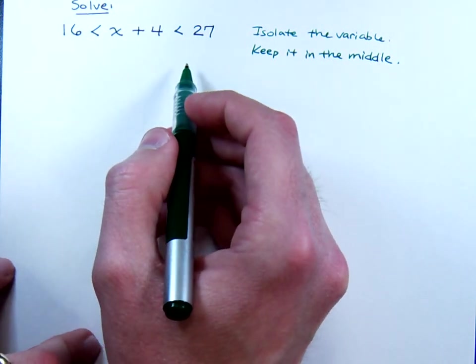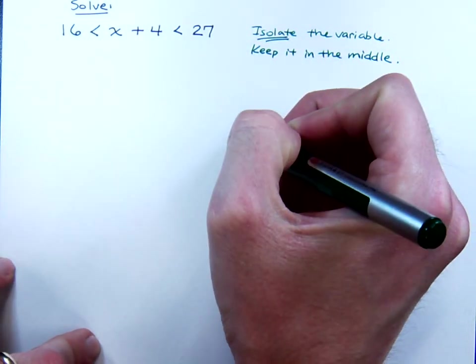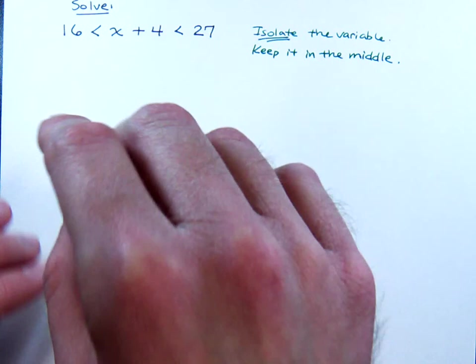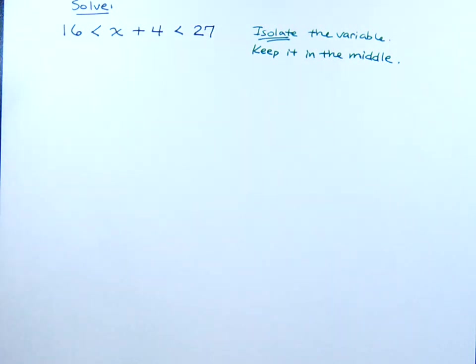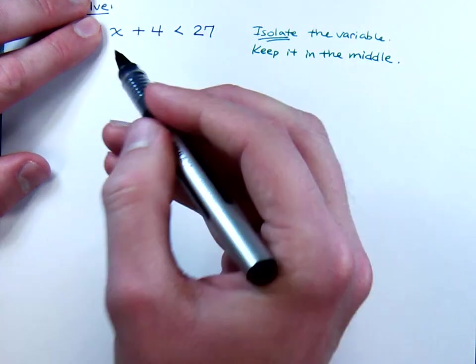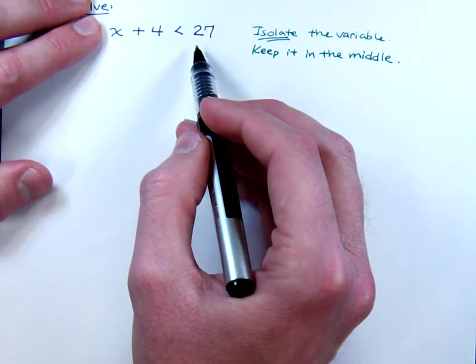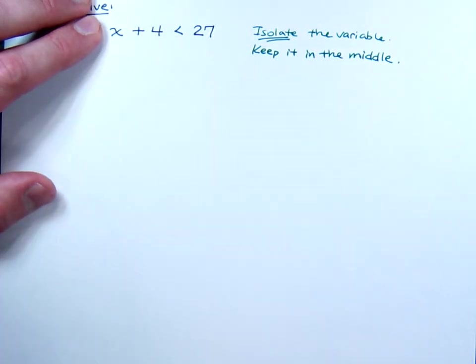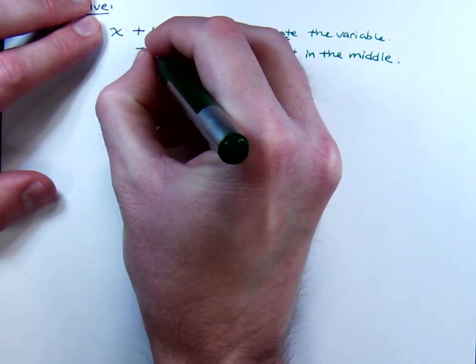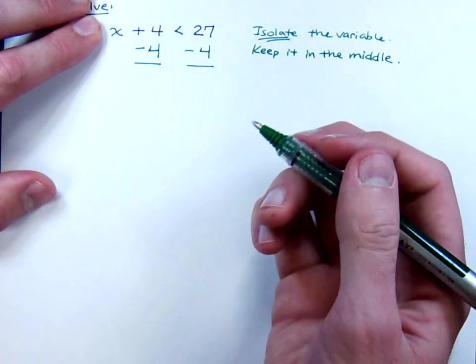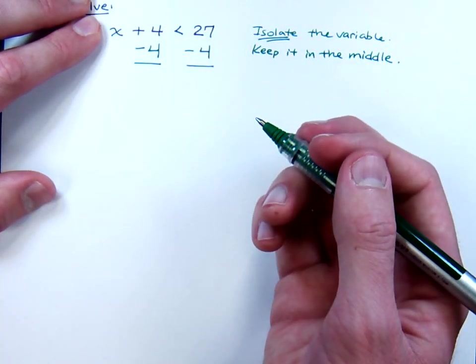You may be wondering, how am I supposed to solve this? The problem that you may have is that you see too much of this problem at once. If I cover up this and I gave you the inequality x plus 4 is less than 27, could you solve that? Sure you could. All you would have to do is subtract 4. Let's go ahead and show that. Suppose I just show minus 4 and minus 4. I think you would agree that that is a legitimate way of doing the problem.